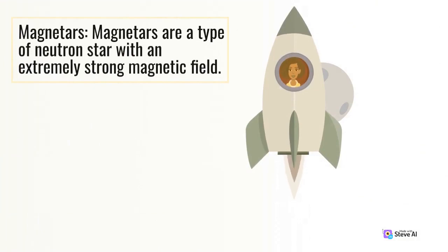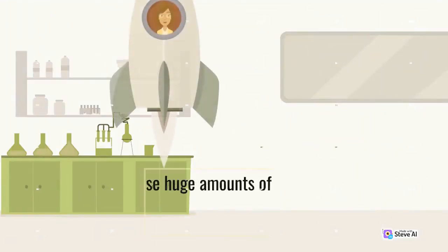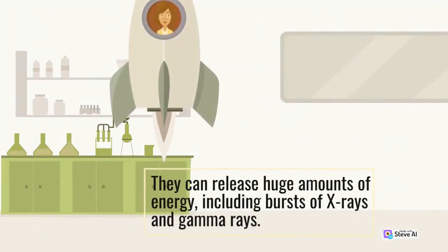Magnetars are a type of neutron star with an extremely strong magnetic field. They can release huge amounts of energy, including bursts of X-rays and gamma rays.